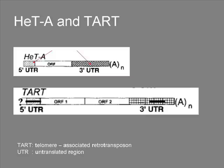Large 3' UTR, terminating in an oligo-A tail, as all LINEs do. TART has two ORFs coding for a gag-like protein, and coding for reverse transcriptase and endonuclease.